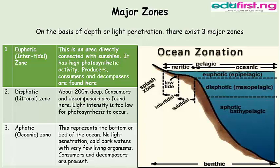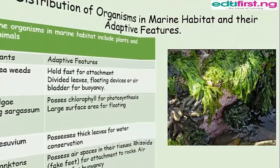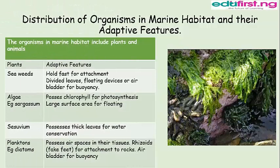Organisms in marine habitats and their adaptive features. Let's look at the distribution of organisms in marine habitats and how they survive in their environment. First, the plants. Seaweeds possess holdfasts for attachment, divided leaves, and floating devices or air bladders for buoyancy. Algae possess chlorophyll for photosynthesis and large surface area for floating. Succulents possess thick leaves for water conservation. Planktons, for example diatoms, possess air spaces in their tissues, rhizoids or false feet for attachment to rocks, and air bladders for buoyancy.